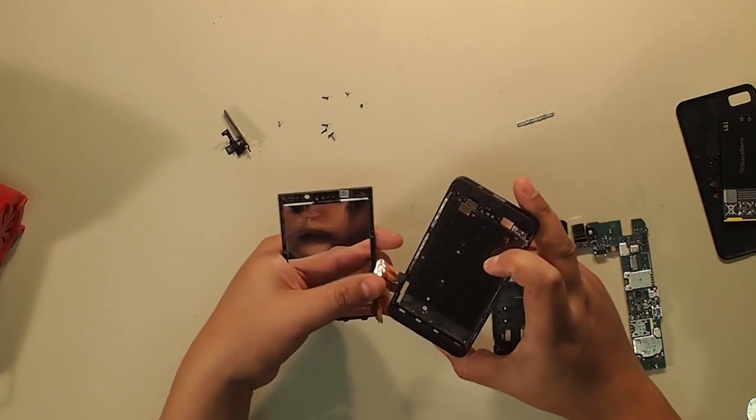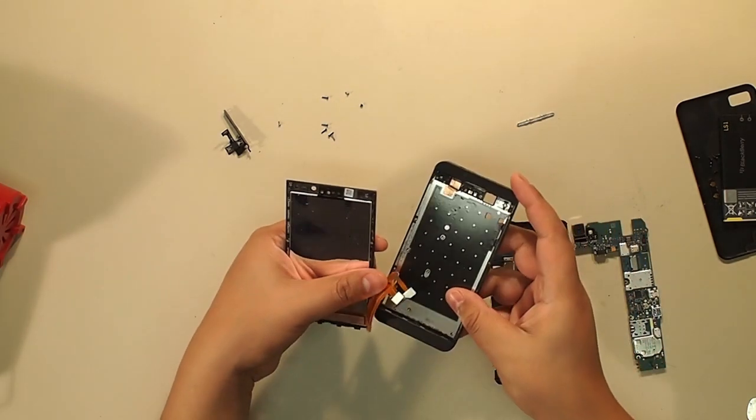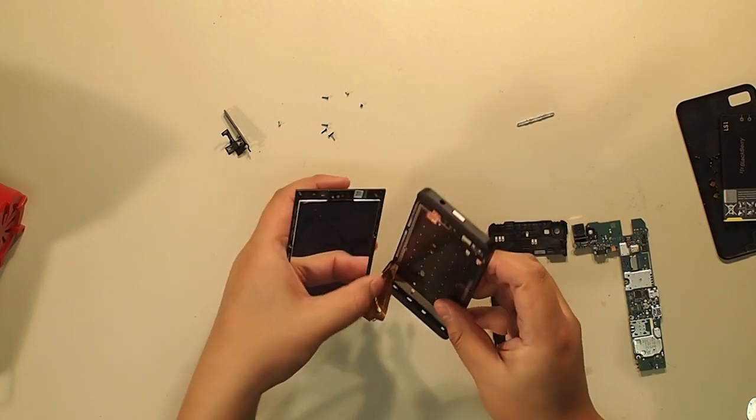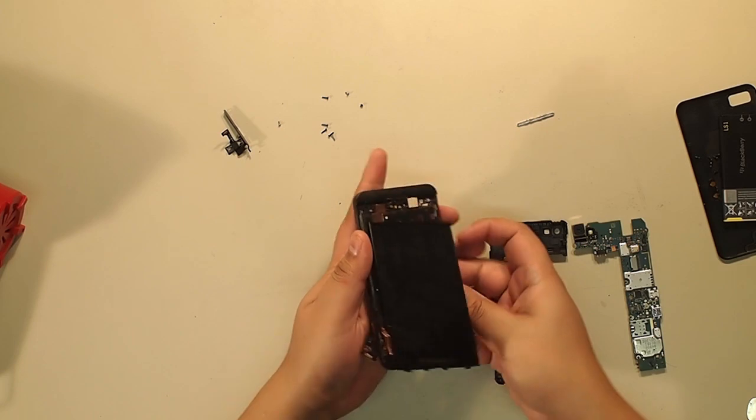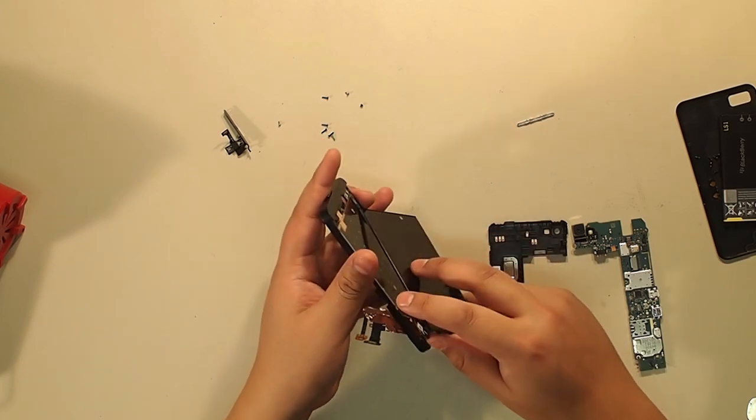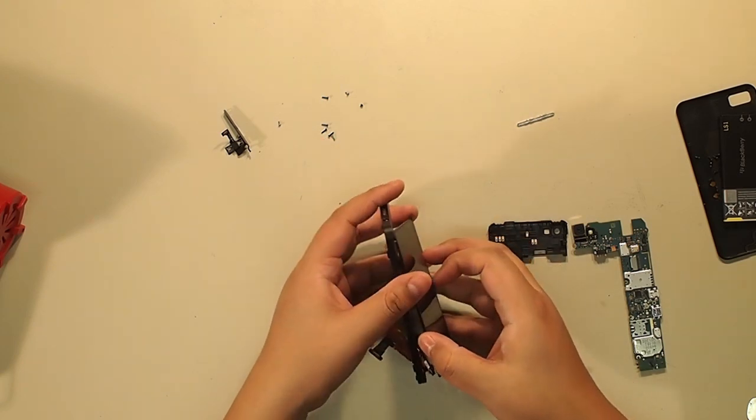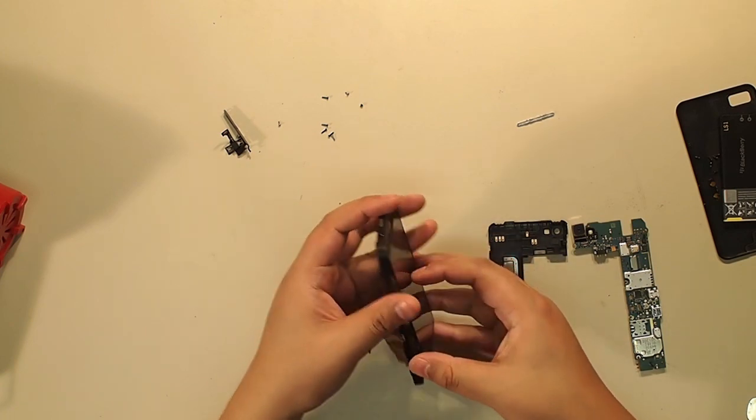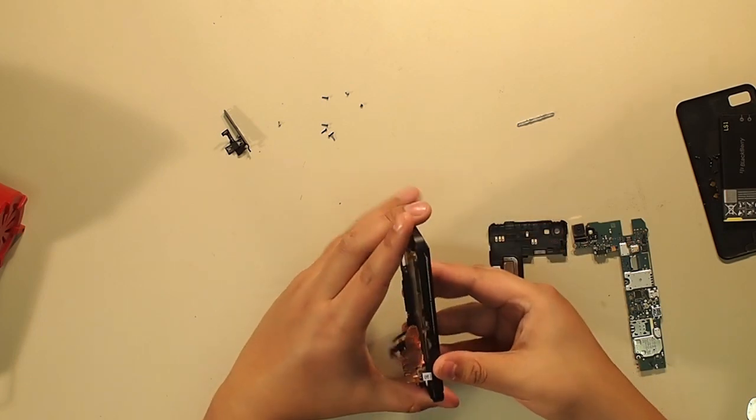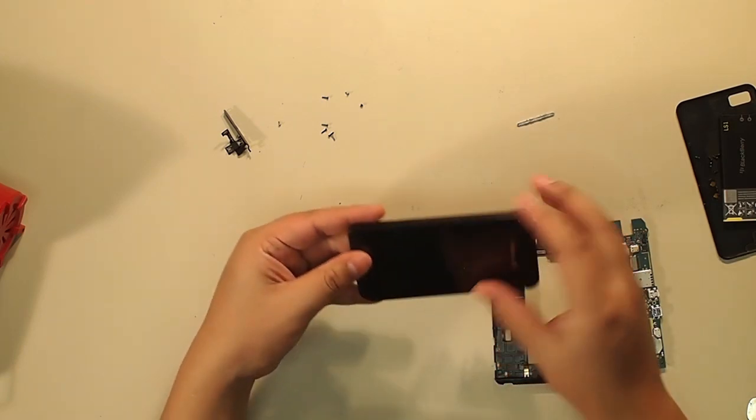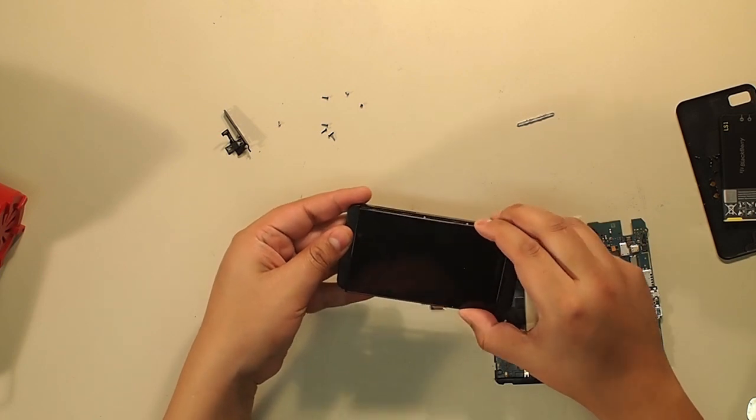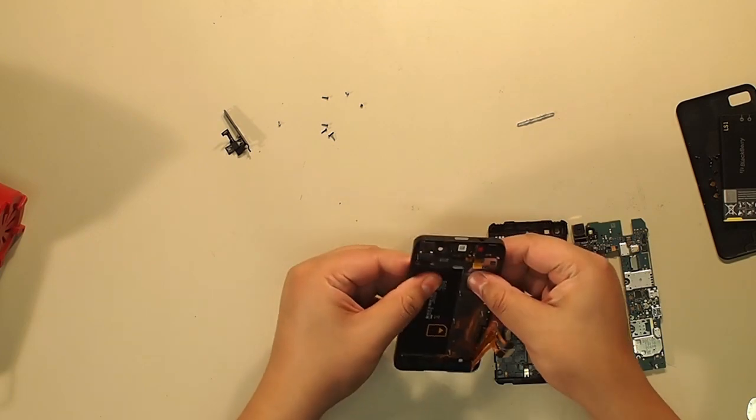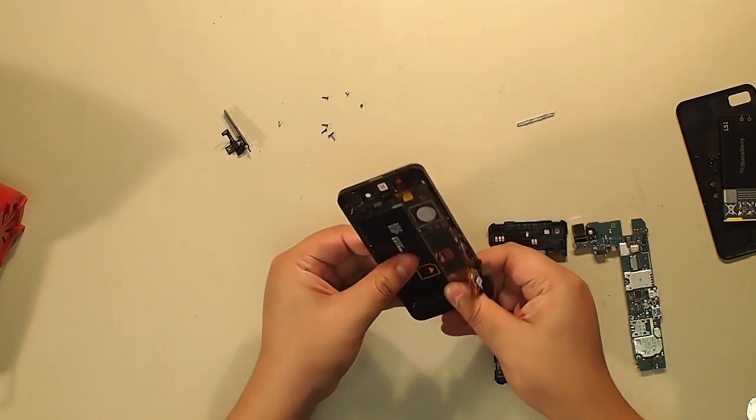Start by sliding the connector in. You gotta go bit by bit. Once that part's in, just twist the mainframe, the midframe around, until you can slide the thick part in. Make sure you don't twist it too much. There you go. Make sure the bottom clips slide in first before putting pressure on the screen. And there we go.